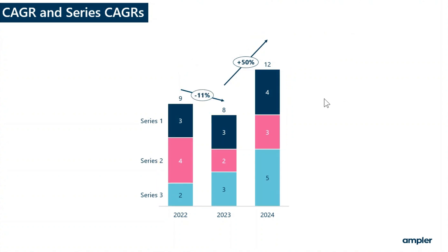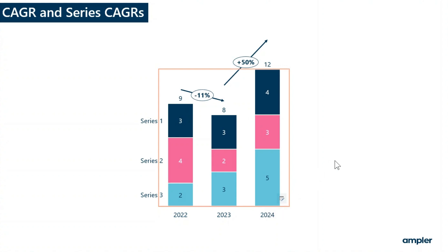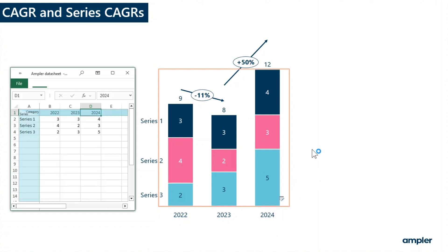Keggers are automatically calculated and update whenever your data is updated. This is also true when you change the data in the datasheet.